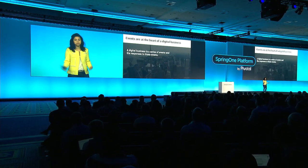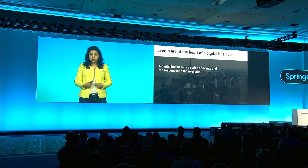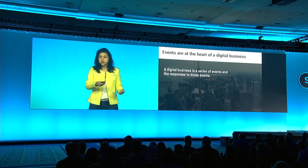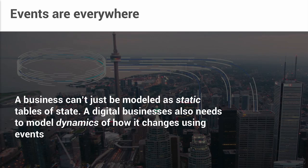Reasoning from first principles — what are digital businesses? A digital business is largely modeled in software and data, unlike people and processes. In that sense, a digital business is really a series of events and responses to those events. When a credit card transaction happens, some software triggers its processing. When you request a ride, some software triggers its scheduling. 'When this happens, do that' is a very natural way of thinking about what a digital business is. Events that cause actions in a business are really everywhere. A digital business can't just be modeled as static tables of state — you need that, but you also need to model the dynamics of how that state changes, the 'what happened' part. That's the reason why events are everywhere in a digital business.